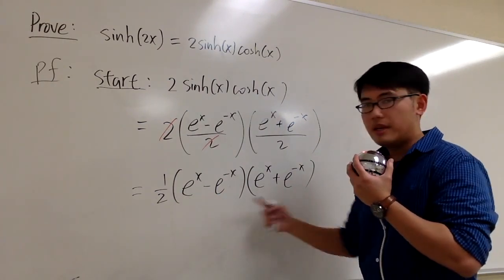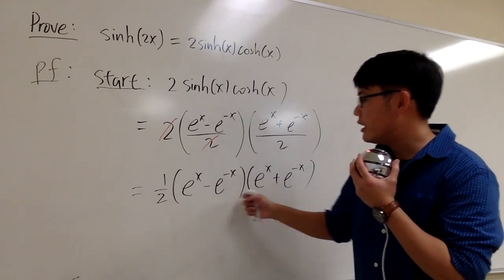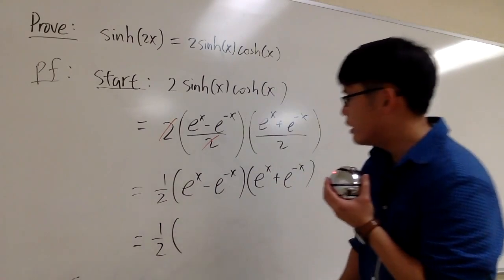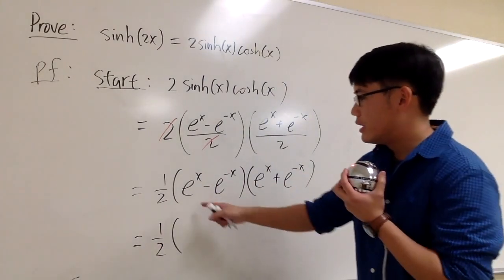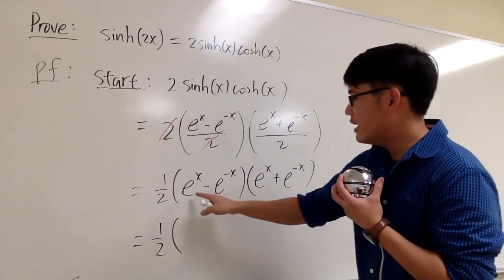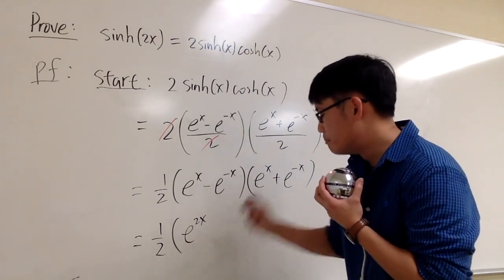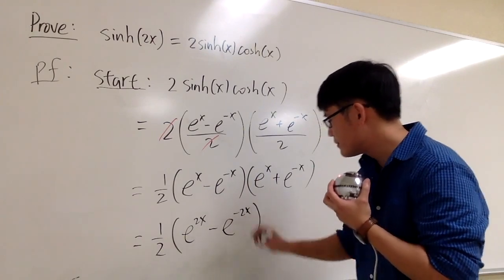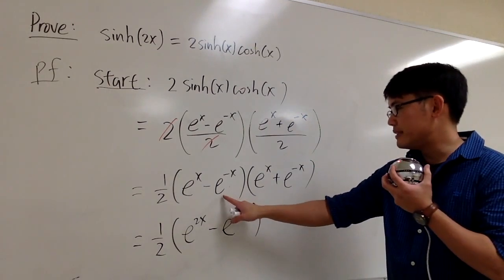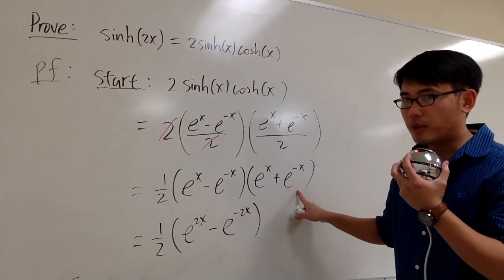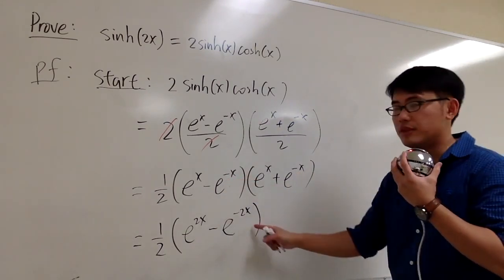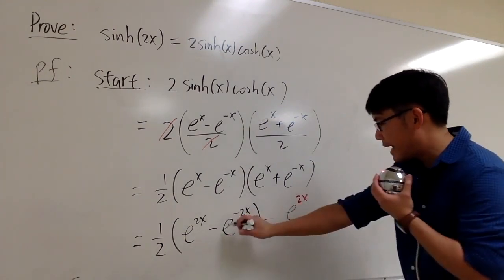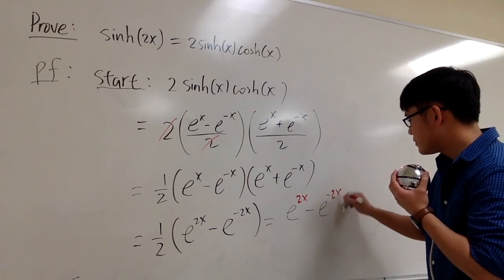The front terms are the same and the back terms are the same, so this is in the form of (a minus b)(a plus b), which equals a squared minus b squared. The result is one half times e to the 2x minus e to the negative 2x, since squaring e to the x gives e to the 2x and squaring e to the negative x gives e to the negative 2x.